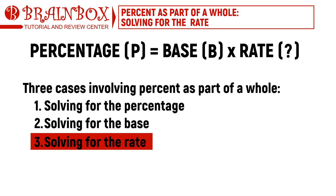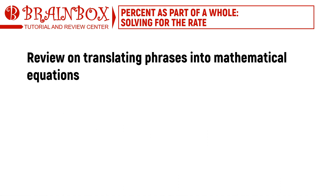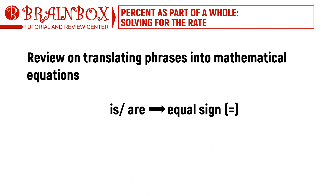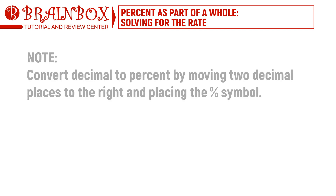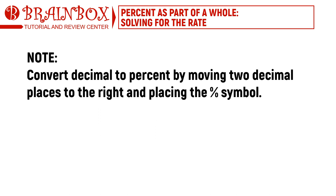This is when we will look for the rate. As with the other two cases, we will need to translate phrases into mathematical equations. There are clue words to remember: 'is' or 'are' means equal sign, 'of' means multiplication, and 'what' implies the unknown variable — we will use N as our variable. Also note that we will be converting a decimal number to its percent equivalent by moving two decimal places to the right and placing a percent symbol.